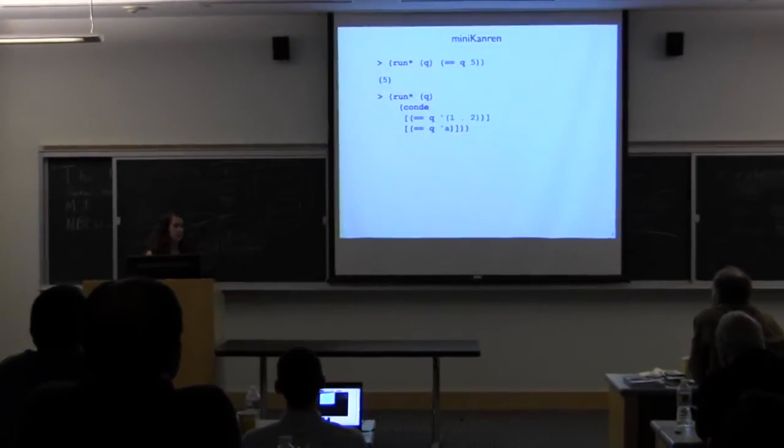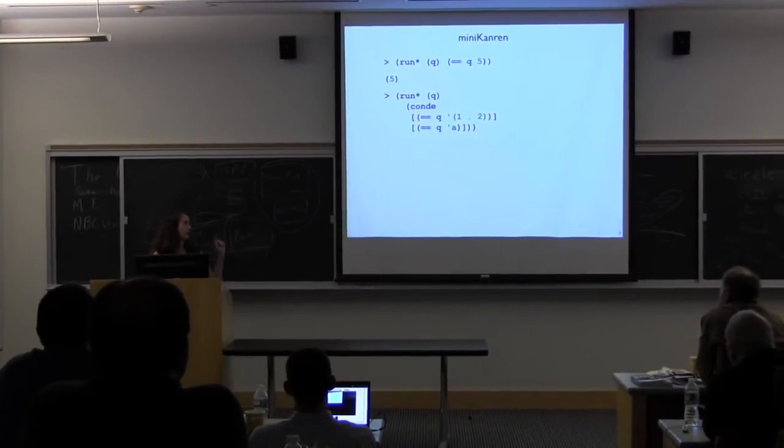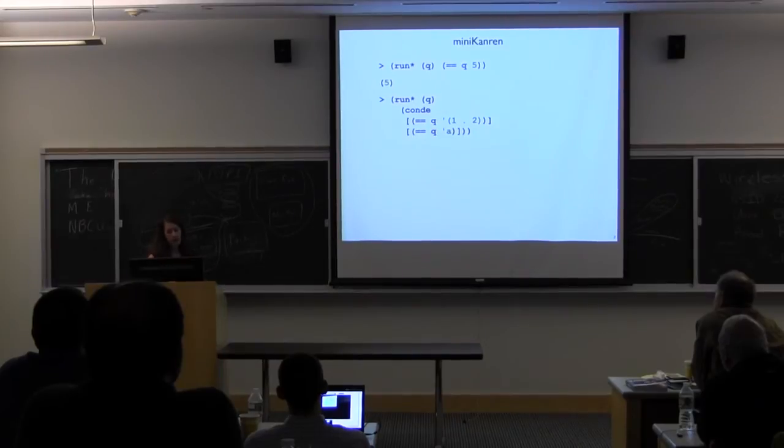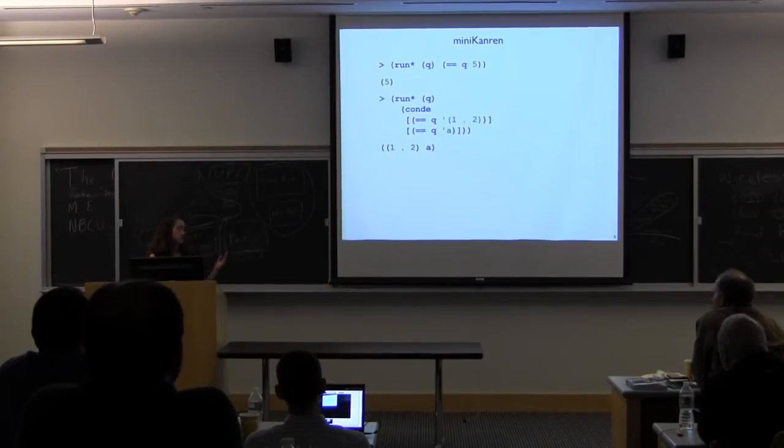You can say, OK, q can be either the list, or the pair 1, 2, or it could be the symbol A. You get back what you expect.